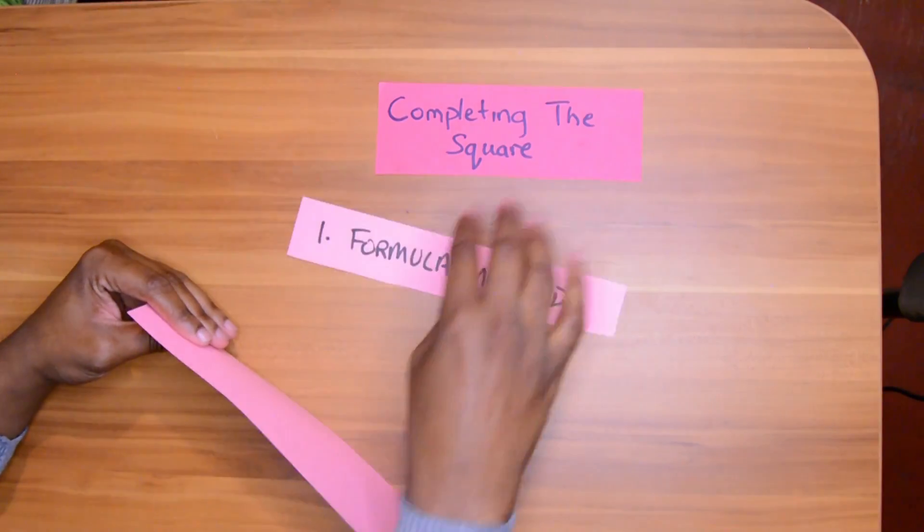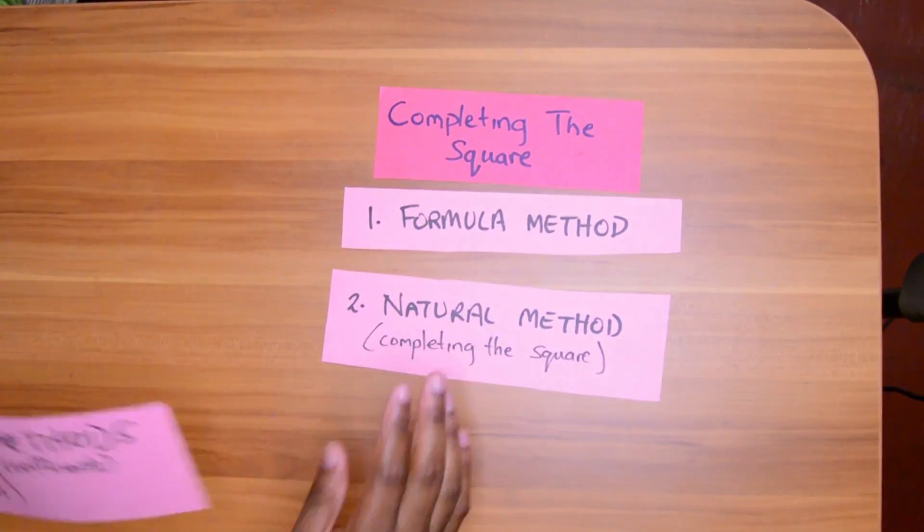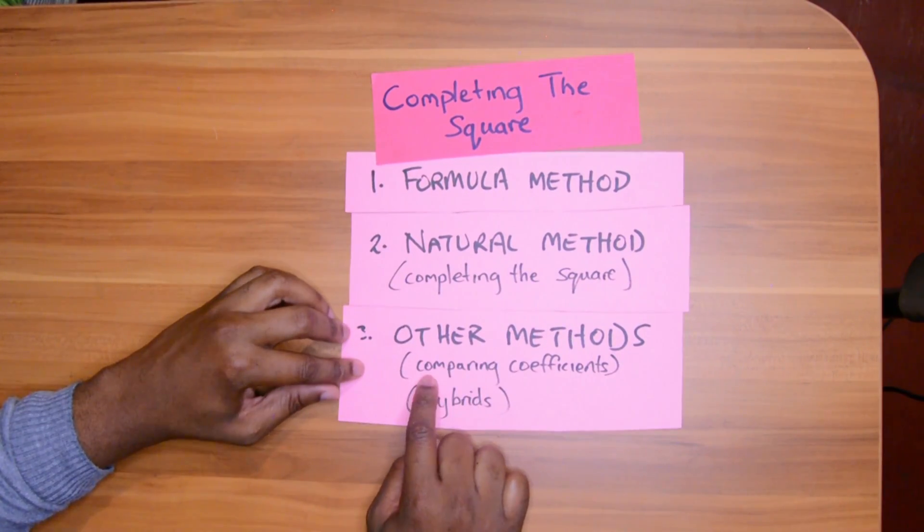One of the problems with completing the square is your teacher will show you one method, your lesson teacher will show you the next method, your cousin will show you another method, I will show you another, the next YouTube video shows another, and your textbook shows yet another. In this video, I'll cover the formula method — reasons why you can and can't use it — and the natural method, which is the proper completing the square method. That's my favorite method. We'll also mention other methods.